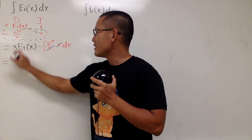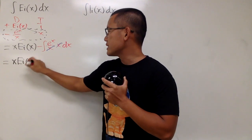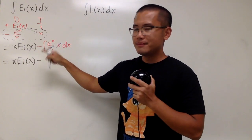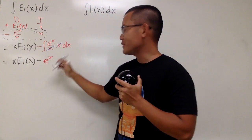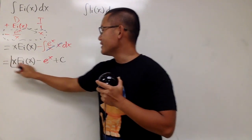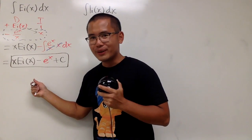Finally, the answer is x times ei(x), and then minus e^x, just like this. And we're done, plus c. This is it. Very cool, isn't it?